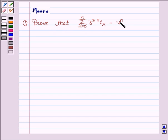Now to solve this question, we need to know the expansion of a plus b whole to the power n. It is equal to nc0 a to the power n plus nc1 a to the power n minus 1 plus